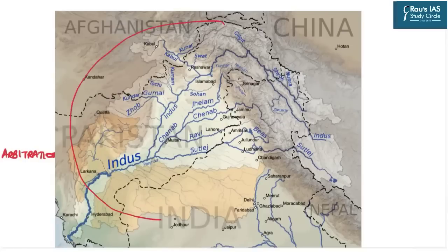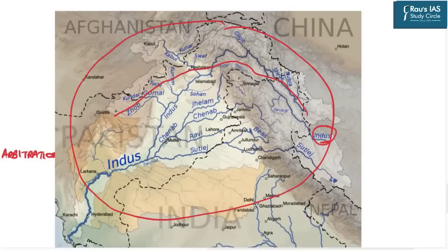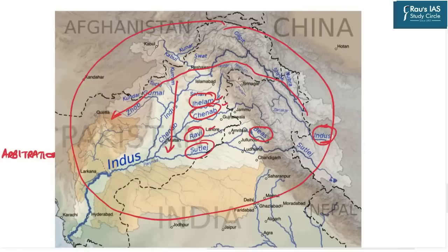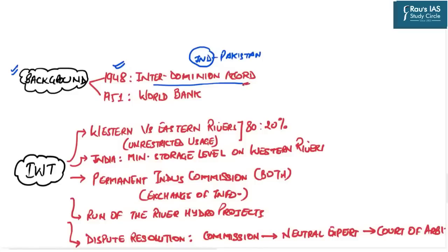The Indus and its tributaries flow from north to south in this order: Indus, Jhelam, Chenab, Ravi, Beas, and Satluj. The Indus River originates in Tibet, travels through the Himalayas and Karakoram ranges of India, and then enters Pakistan. Since India is the upstream country, it was responsible for providing water to the downstream country, Pakistan.